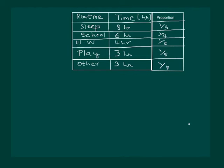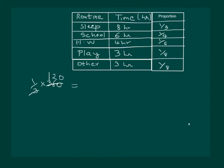So now we have another column showing the proportion of the circle for each entry. Now it remains to calculate the angle for each sector. To calculate 1/3 of the circle, we know that a circle has 360 degrees. We take 1/3 of 360 degrees, which comes out to be 120 degrees — so 120 degrees will mark one third of the circle.